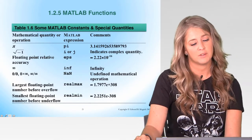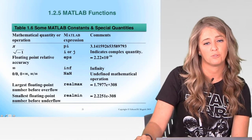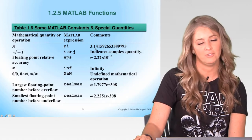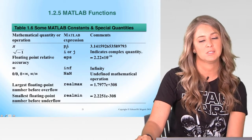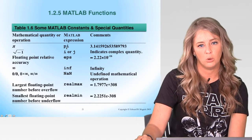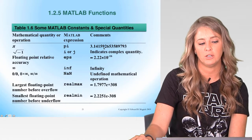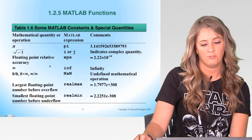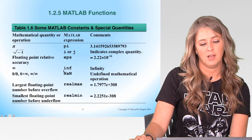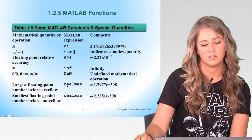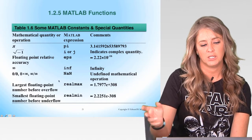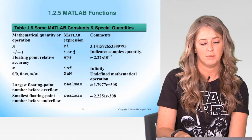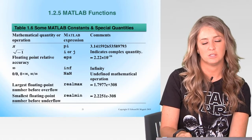Table 1.6 provides additional syntax and notation. For example, we don't have to type 3.14159 every time we want pi — we can simply type the word pi and MATLAB knows that numerical value. Similarly, for the square root of negative 1, we can use i or j. For infinity, we have inf notation, along with realmax, realmin, and others. I'd recommend going through and trying a few of them just to get used to the syntax.